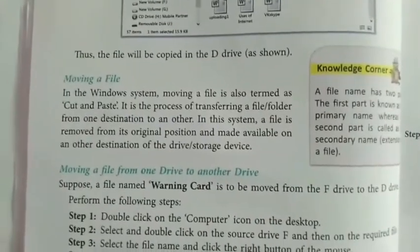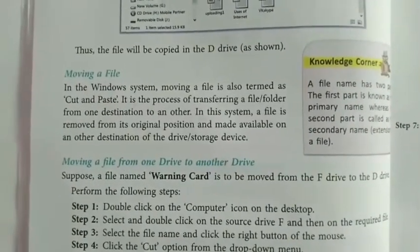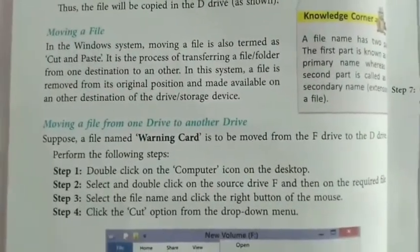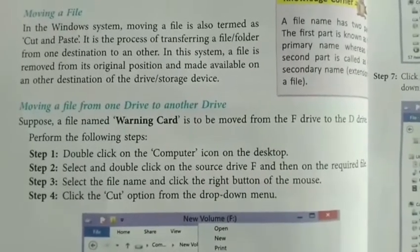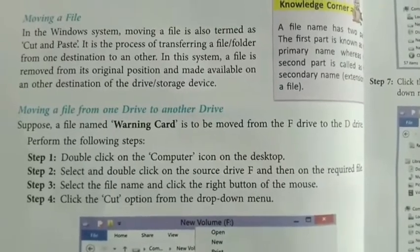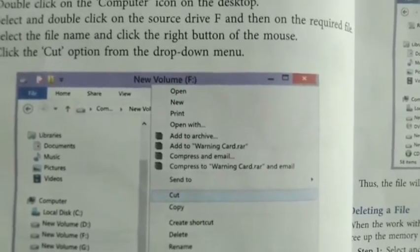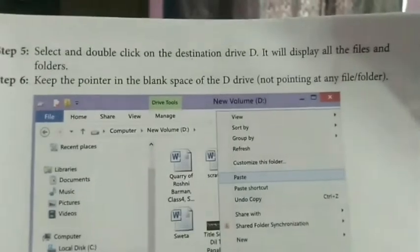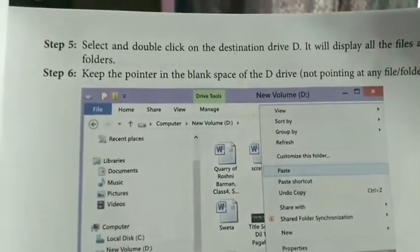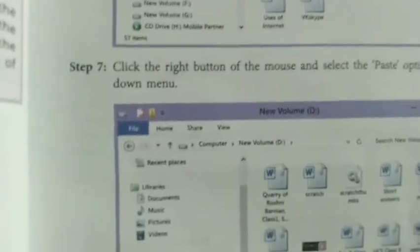Next is moving a file. Moving a file means you copy that file to a new location and the file is removed from the old location. Steps: double click on the computer icon; step two — select and double click the source drive F; select the required file and right click — a shortcut menu appears; select the option Cut, highlighted in light blue. Then in step five, select and double click on the destination drive D — it displays all files and folders. Place the pointer in the blank space, right click — the shortcut menu appears; select Paste. The file will be pasted to the new location.